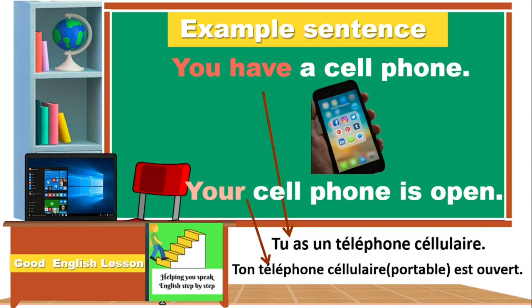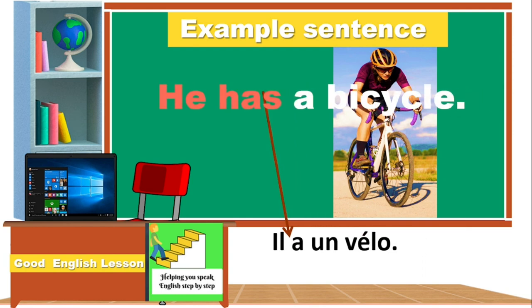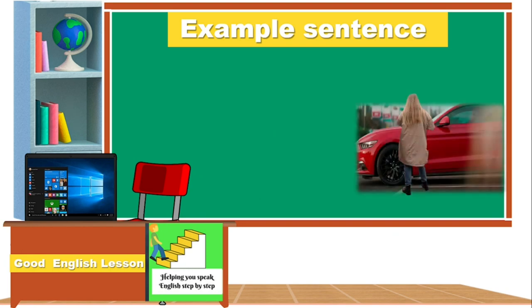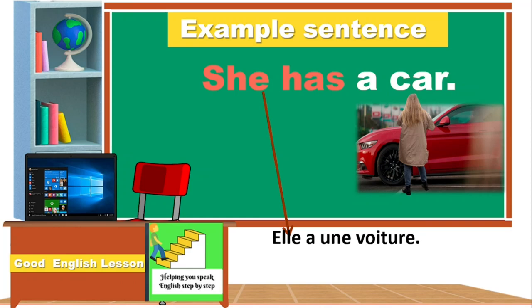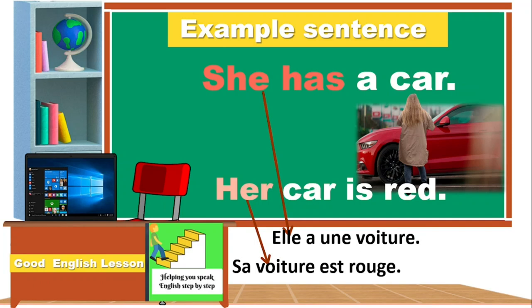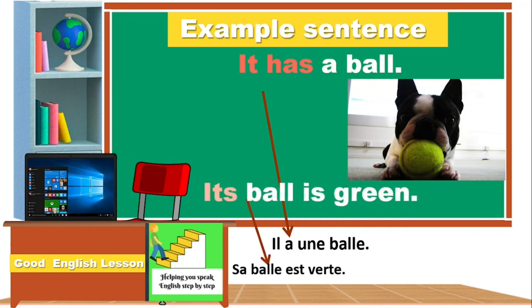He has a bicycle. His bicycle is purple and white. She has a car. Her car is red. It has a ball. Its ball is green.